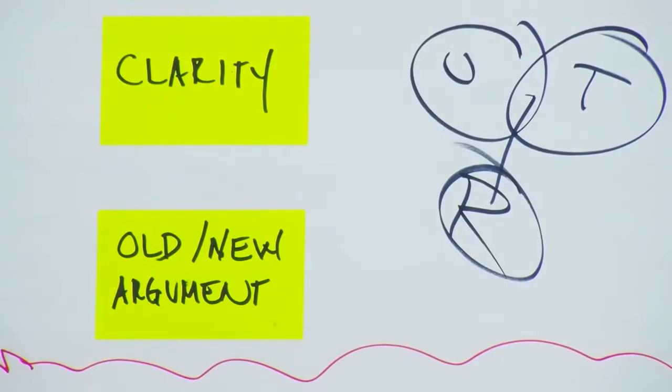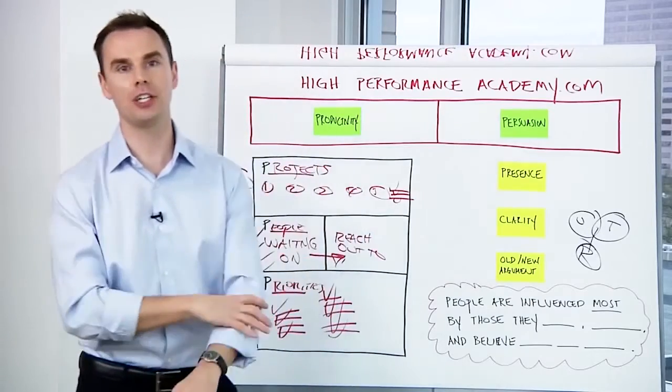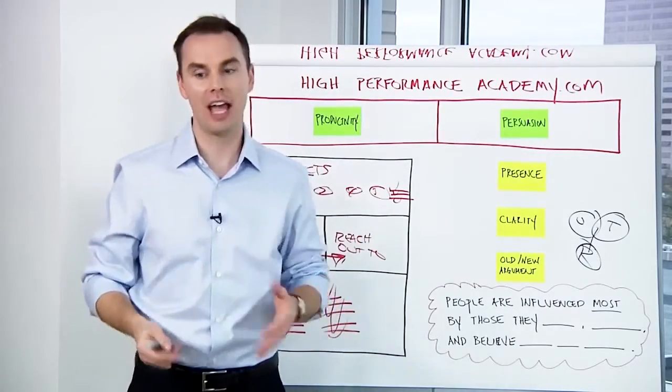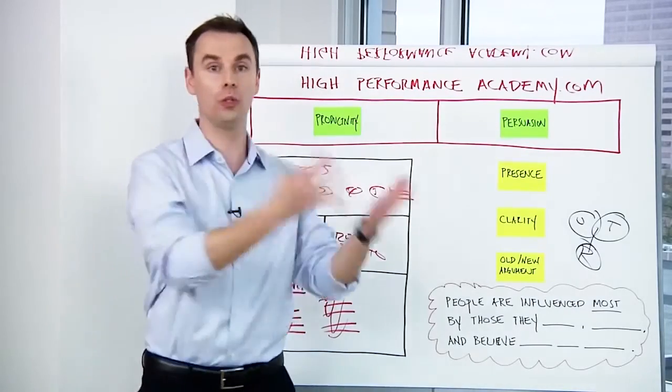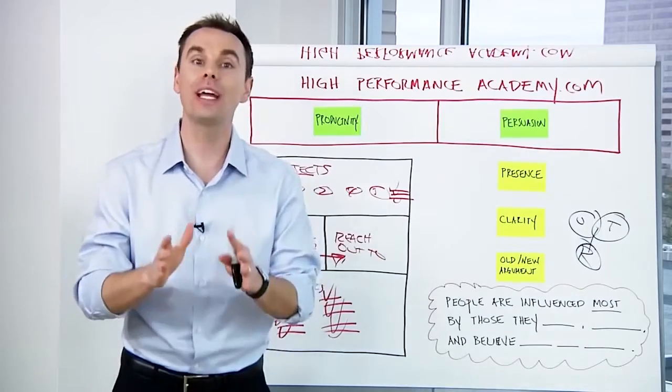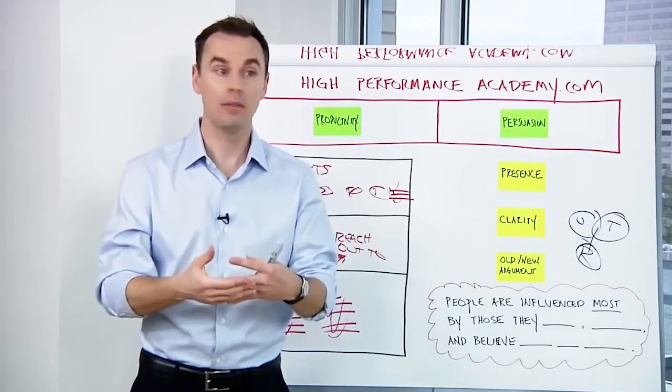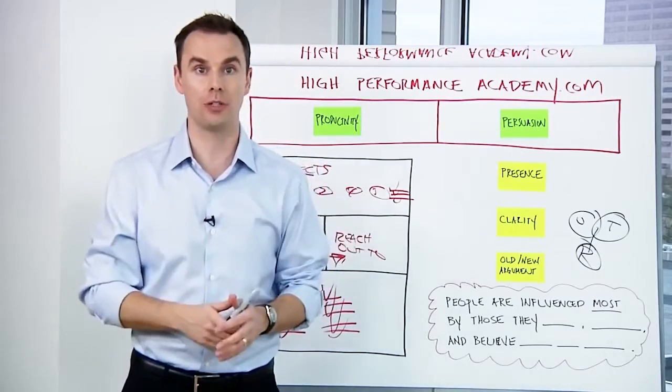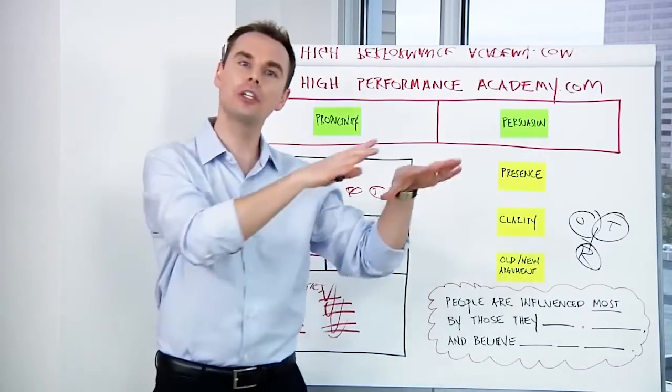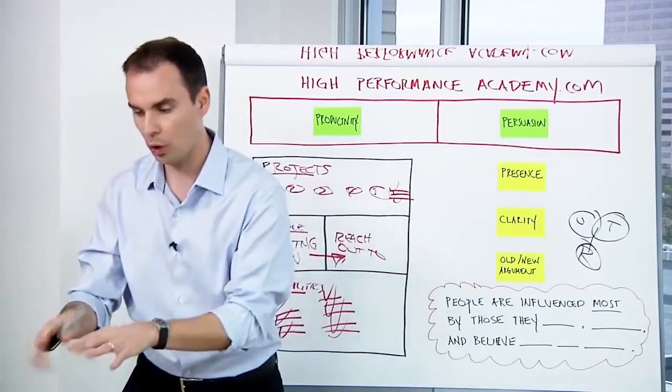Third, let's talk about your ability to have the old and new argument. In persuasion, the person who paints the best picture of as is and to be usually wins. Meaning old world, new world. Meaning if you're going to create a case for change, which is paramount in your priorities and having influence with another person, you've got to describe how things are now and how things should be in the future.